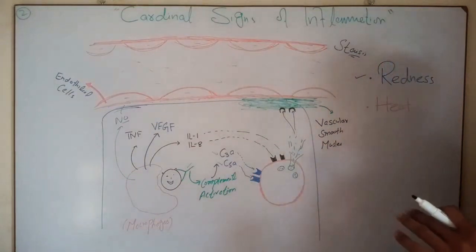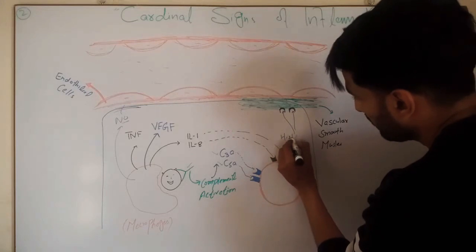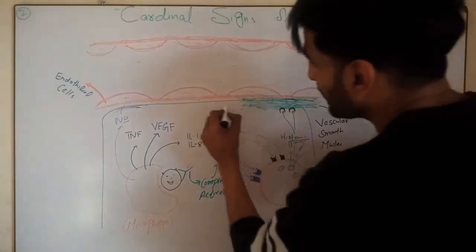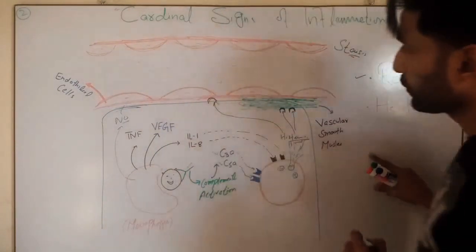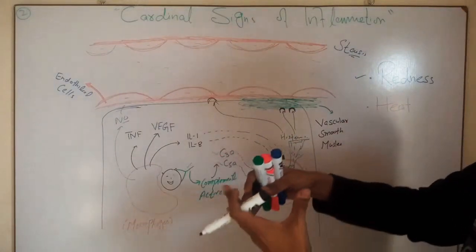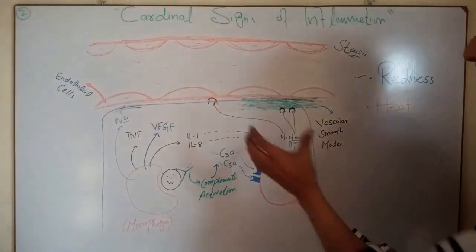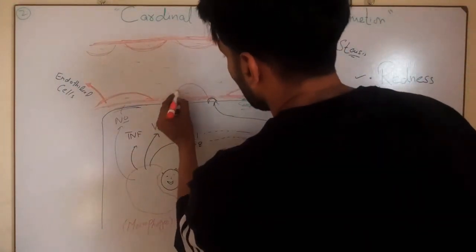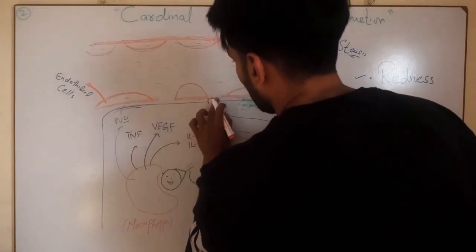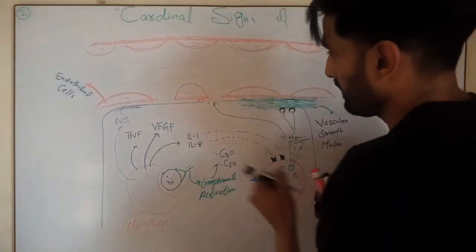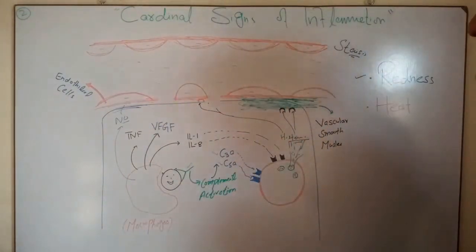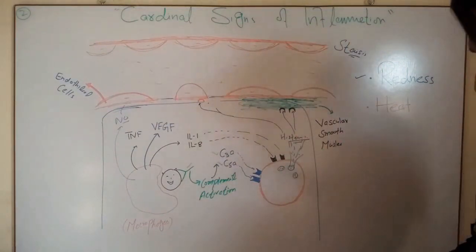Now, histamine released from the mast cell also has receptors on the endothelial cells. When it acts on smooth muscle it causes vasodilation, but when it acts on endothelial cells it causes endothelial cell contraction. Once these cells contract, they shrink, and a gap is produced between the endothelial cells — the gap between endothelial cells increases.